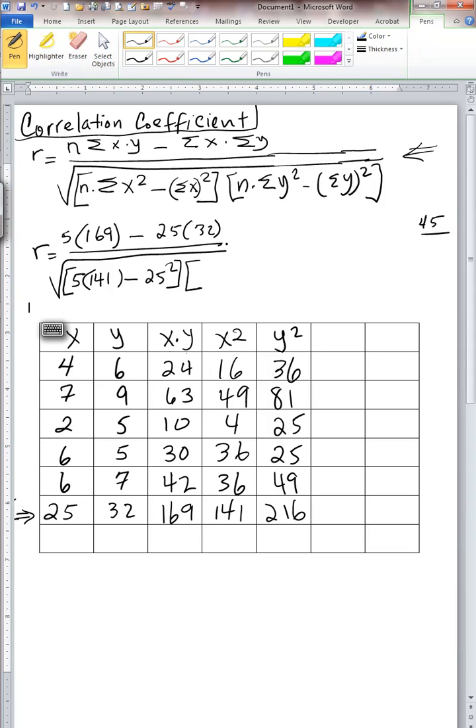The next term in our denominator relates to the y variable. So again, we need 5, which is our n, multiplied by the summation of the y squared column. The y squared column is 216. So this is a multiplication. And then we need to subtract from it the summation of the y column, which is 32, and we need to square that. That's our second term.